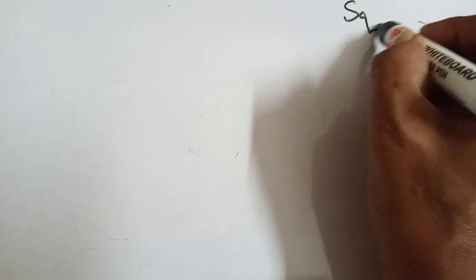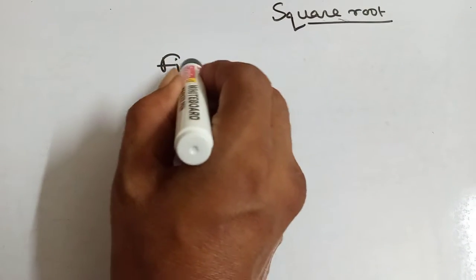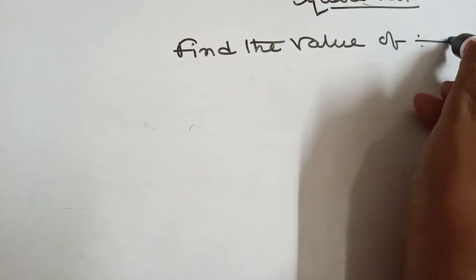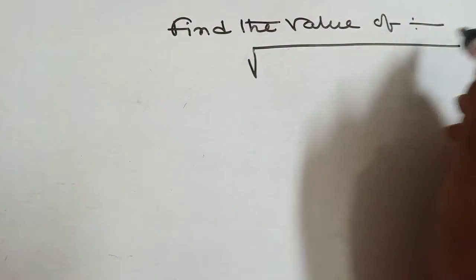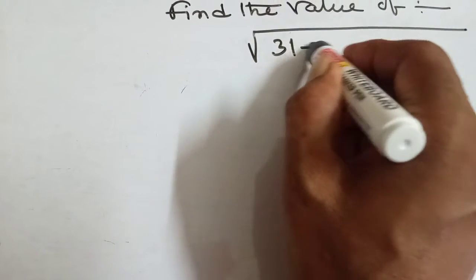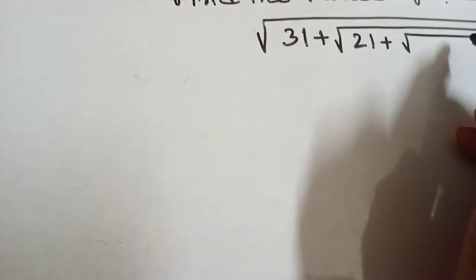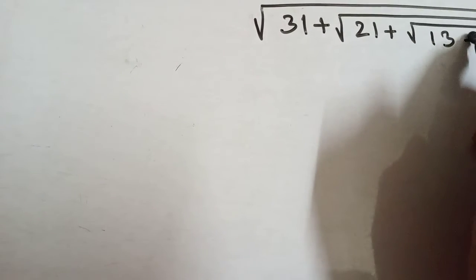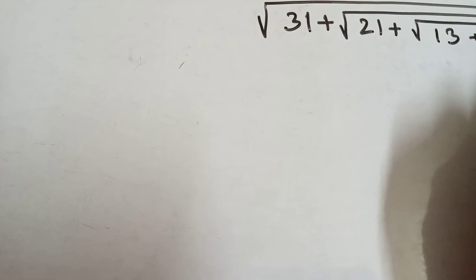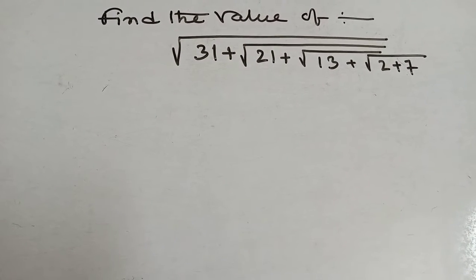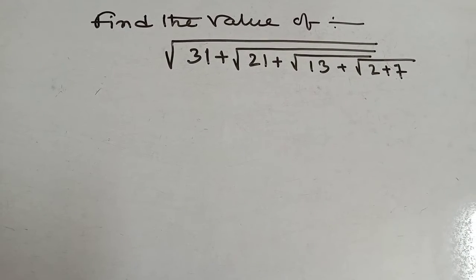Square Root. Find the value of Root under 31 plus Root under 21 plus Root under 13 plus Root over 2 plus 7.